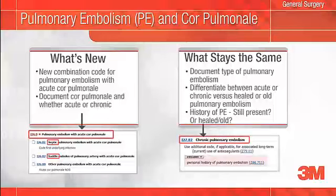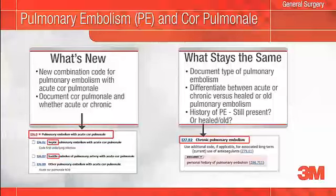History of PE can be interpreted to mean the patient has had the condition for a while, such as history of hypertension, or interpreted to mean the patient no longer has the condition. Documentation of chronic pulmonary embolism versus healed or old PE makes a clear distinction and assures that the severity of illness of your patient is reported accurately. Severity of illness is increased when a patient has a chronic pulmonary embolism, but there is no impact when the patient has a personal history of pulmonary embolism. Note that documentation of healed or old PE results in the reporting of a code for personal history of pulmonary embolism.